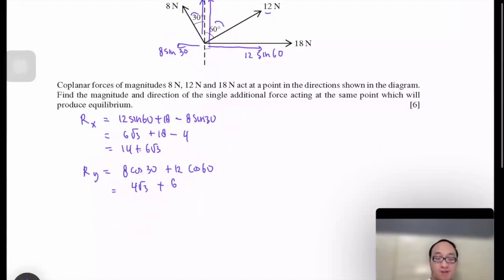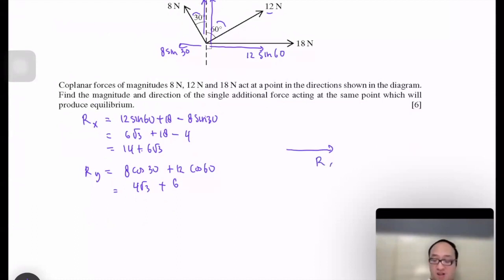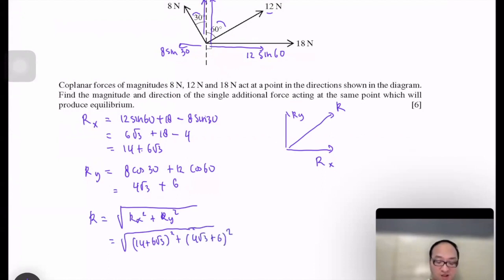Now, these two resultants, Rx and Ry, have a magnitude. So we can find the magnitude R using Pythagoras: Rx squared plus Ry squared equals to square root of 14 plus 6 square root 3 squared plus 4 square root 3 plus 6 squared. And we can get the magnitude is 27.6 Newton.